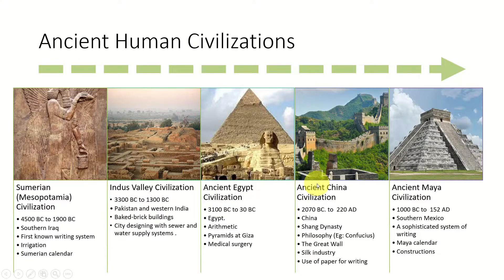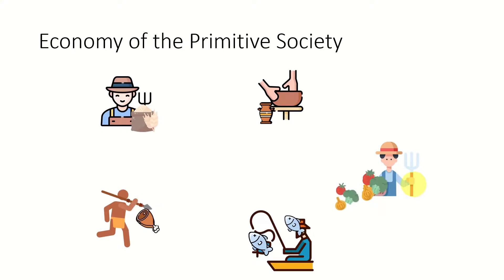The ancient Chinese civilization contributed with philosophers like Confucius and was known for the Great Wall of China and the silk industry, giving rise to the great Silk Route from China toward South Asia, the Middle East, and Europe. The Maya civilization, which evolved in modern-day Mexico, contributed a sophisticated writing system, the Maya calendar, and notable constructions. The economy of primitive society was very simple and managed through the exchange of goods and services.